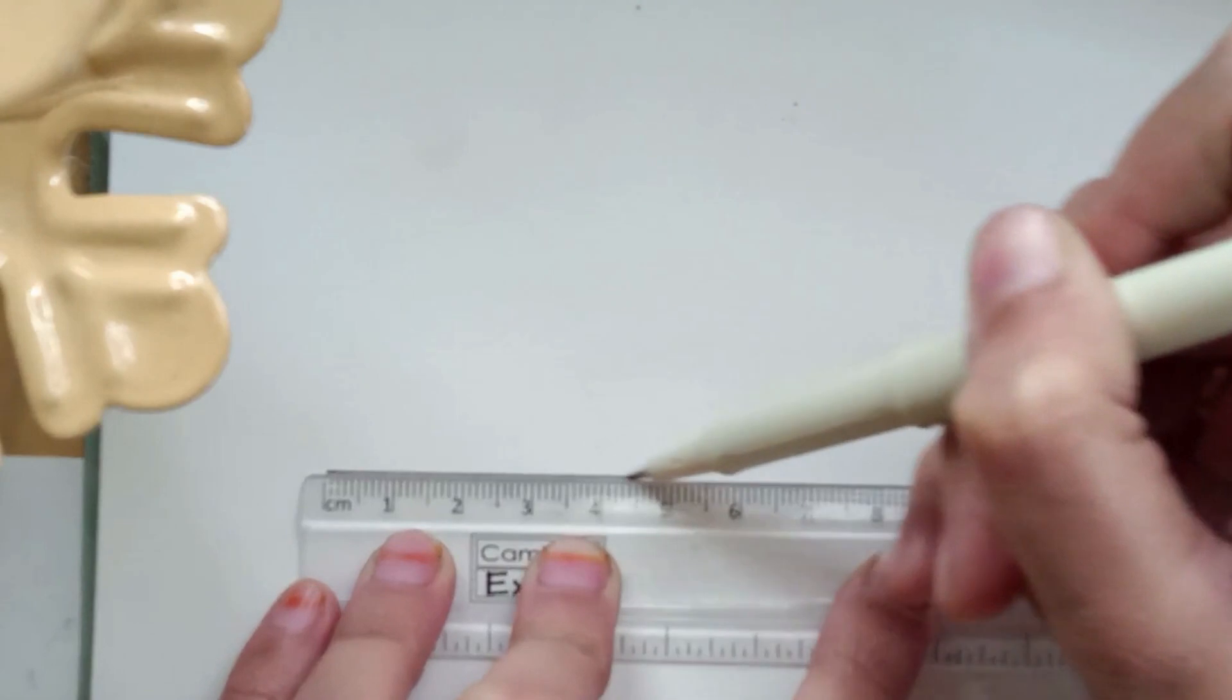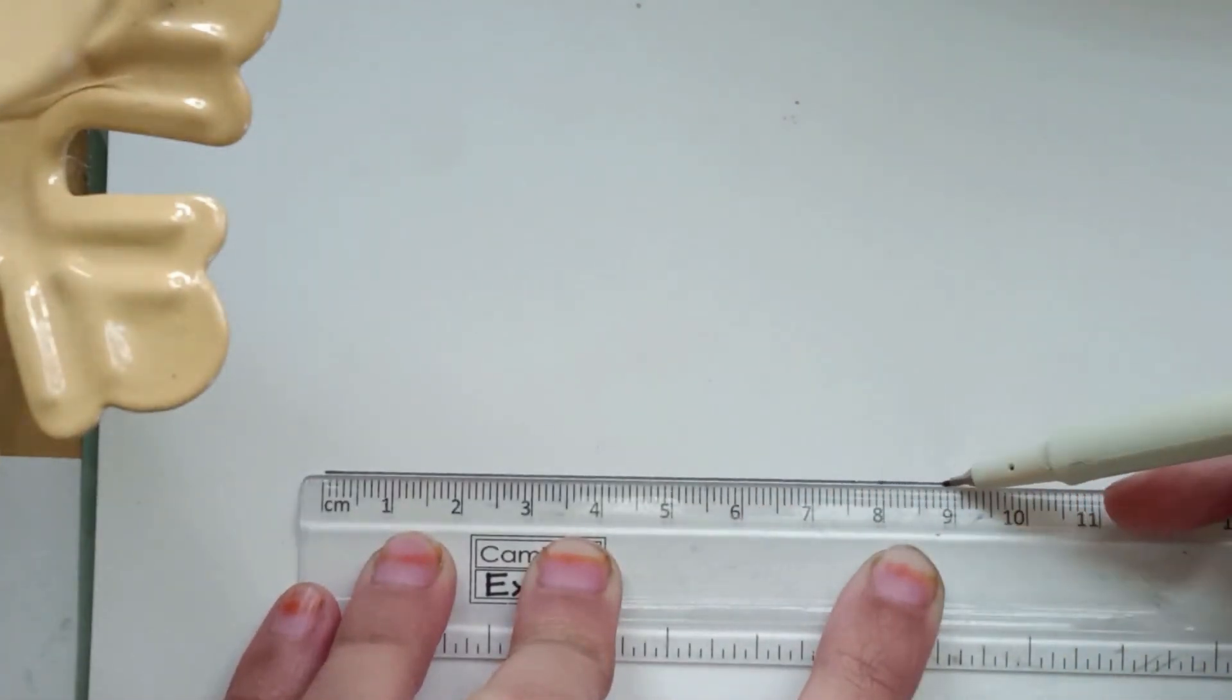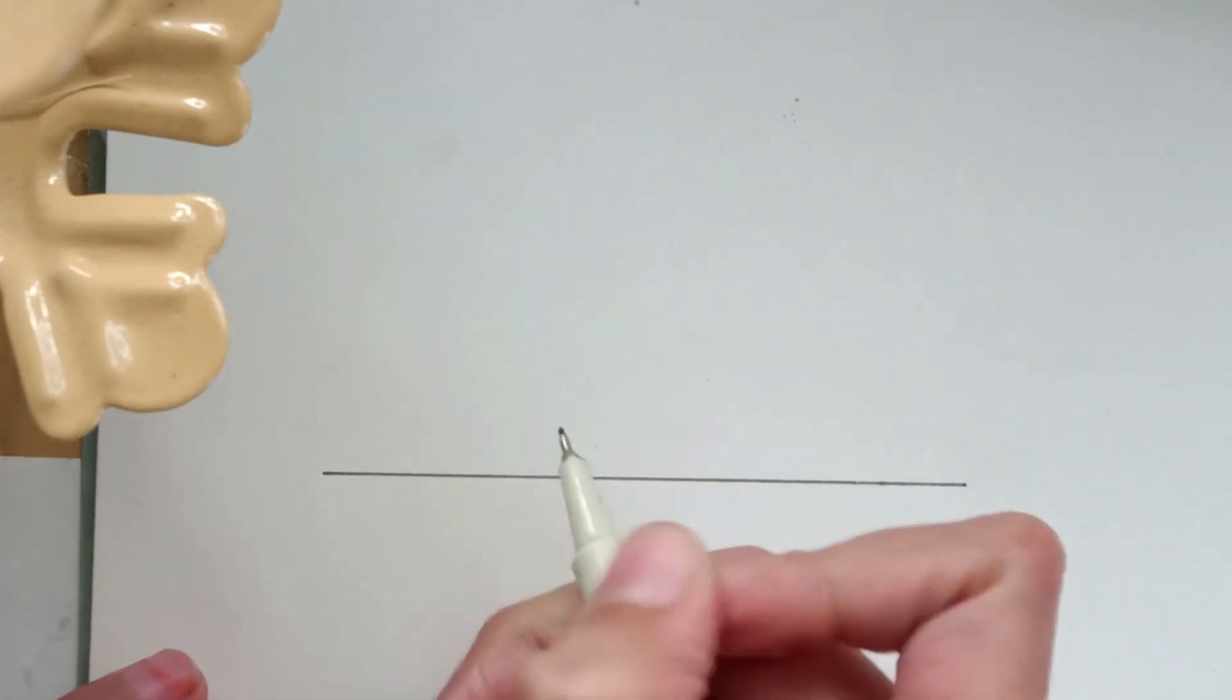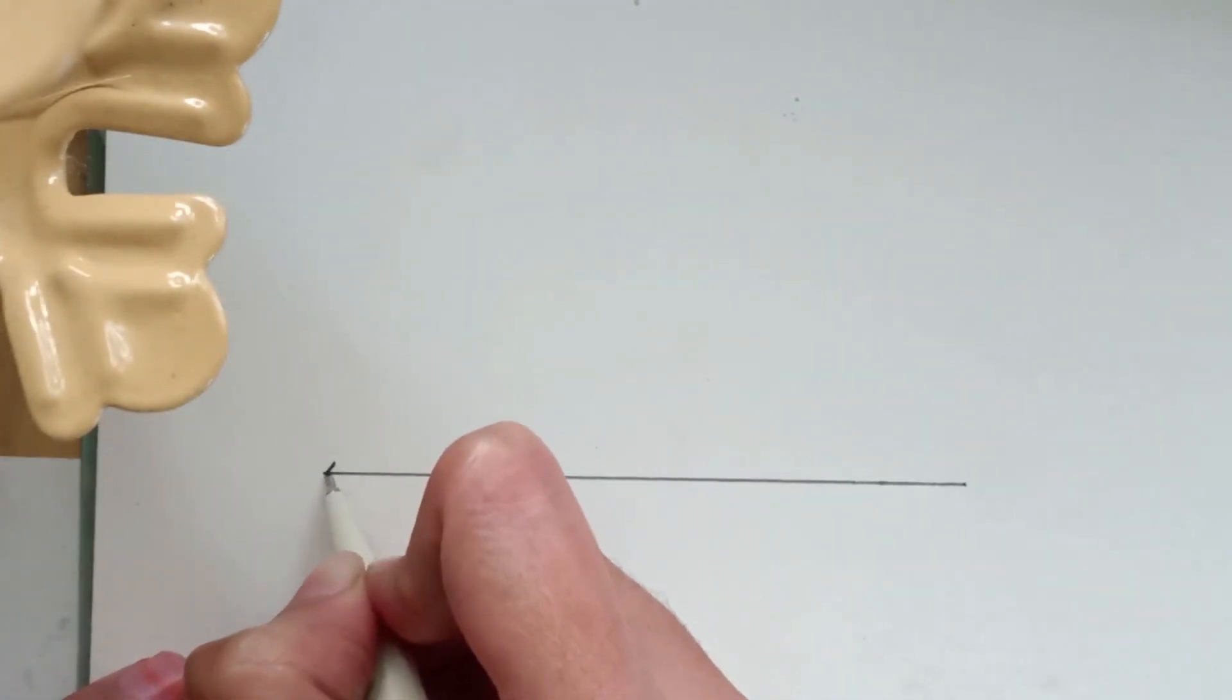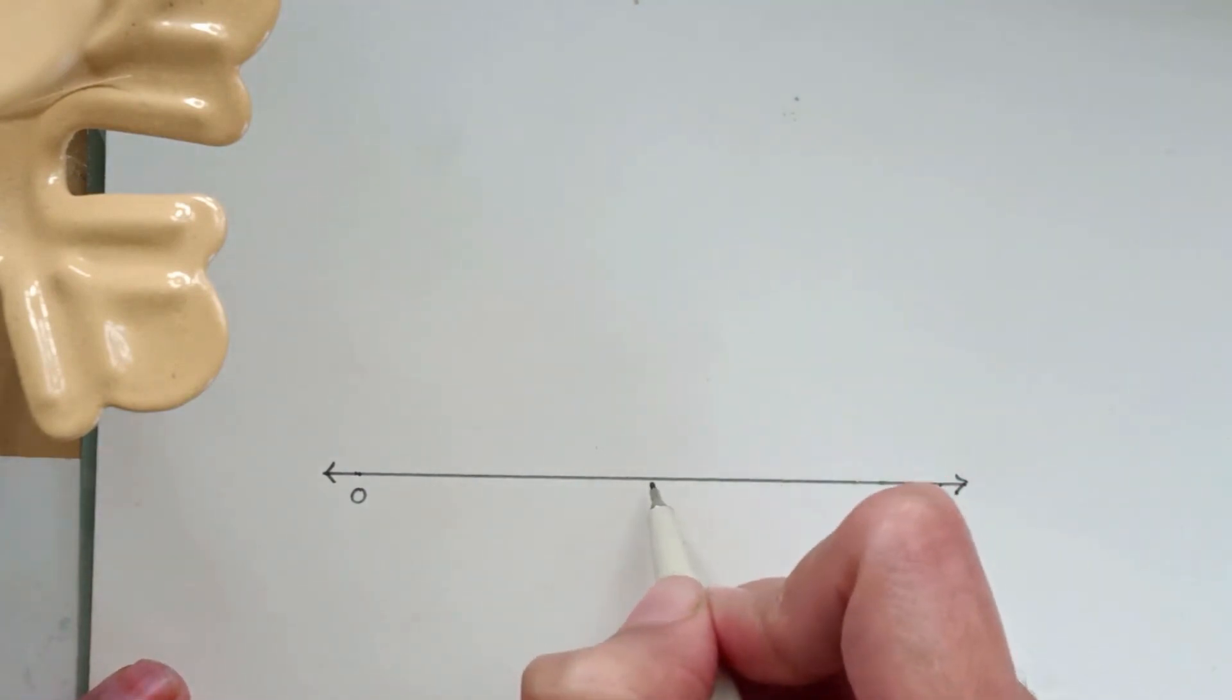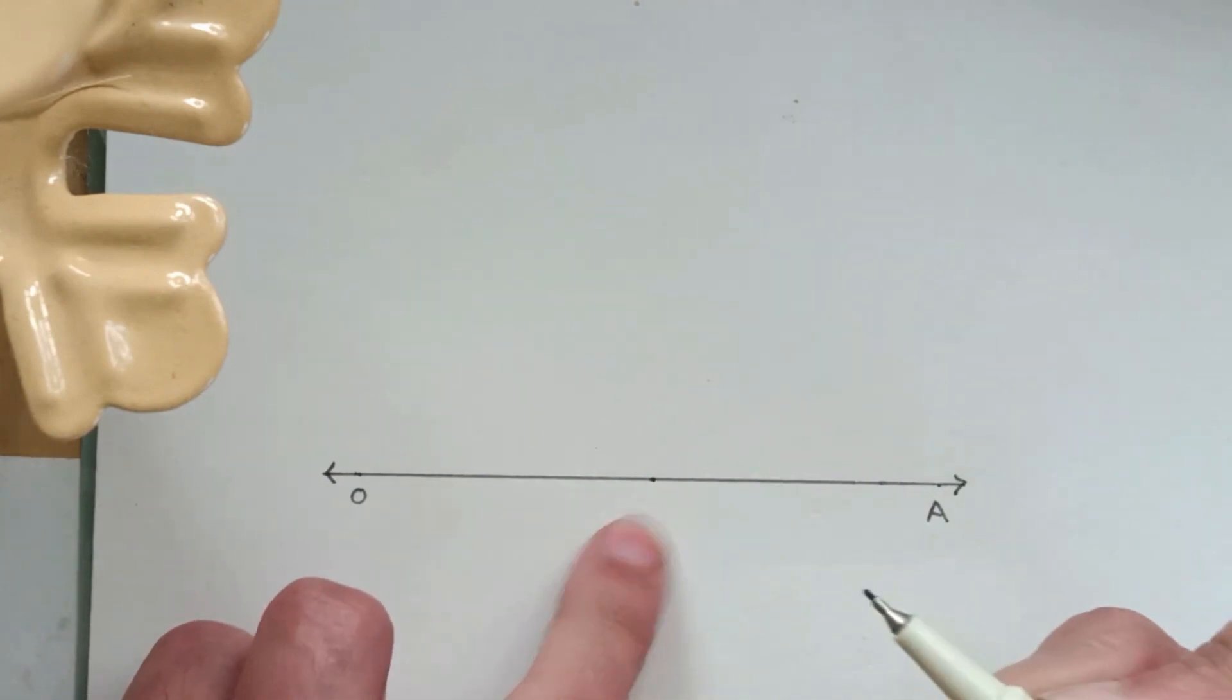Here I have drawn this horizontal line. Let's call it O and A. So we have to mark a point, mark any random point on the line. Let's call it P.